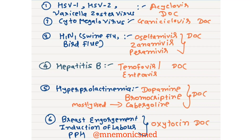For hyperprolactinemia, drug of choice is Dopamine agonist — Bromocriptine or mostly Cabergoline. For breast engorgement, induction of labor, and postpartum hemorrhage, drug of choice is Oxytocin.